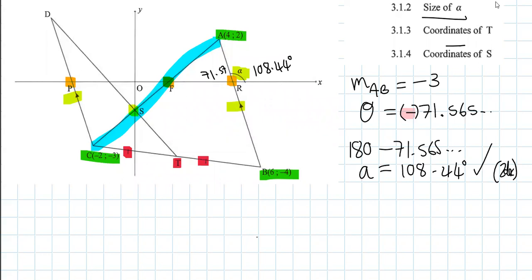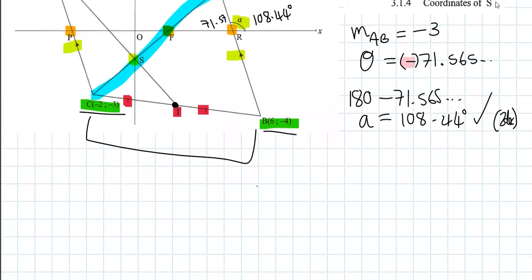Number 3.1.3 asks for the coordinates of T. T is the midpoint between C and B. So we can use the midpoint formula straight away because we've got C and we've got B. T is going to be equal to (X1 plus X2 all over 2, Y1 plus Y2 all over 2). The distance between the two Y's is halved and the distance between the two X's is halved.